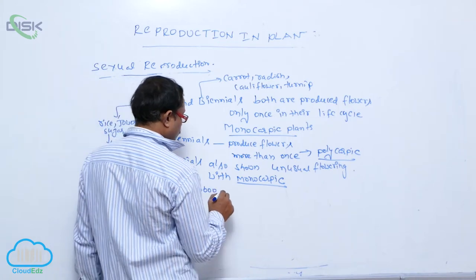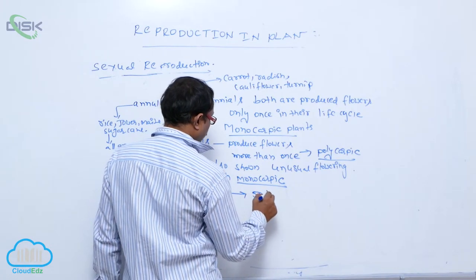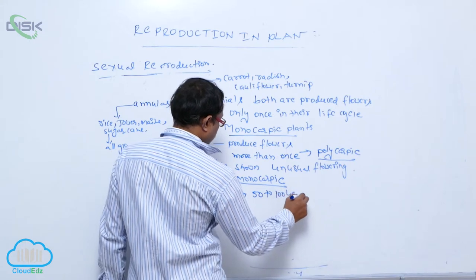It produces flowers in its life cycle 50 to 100 years.